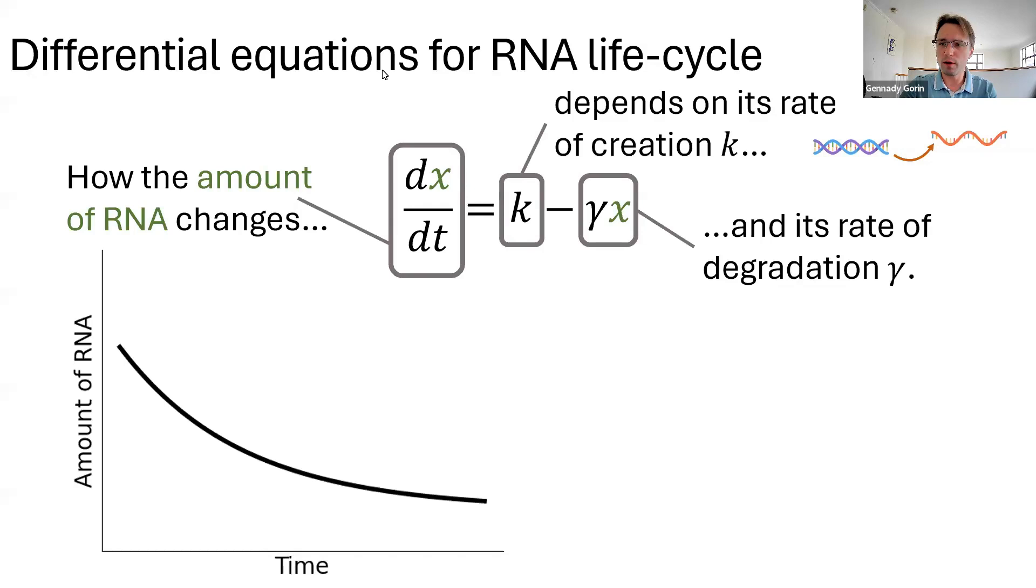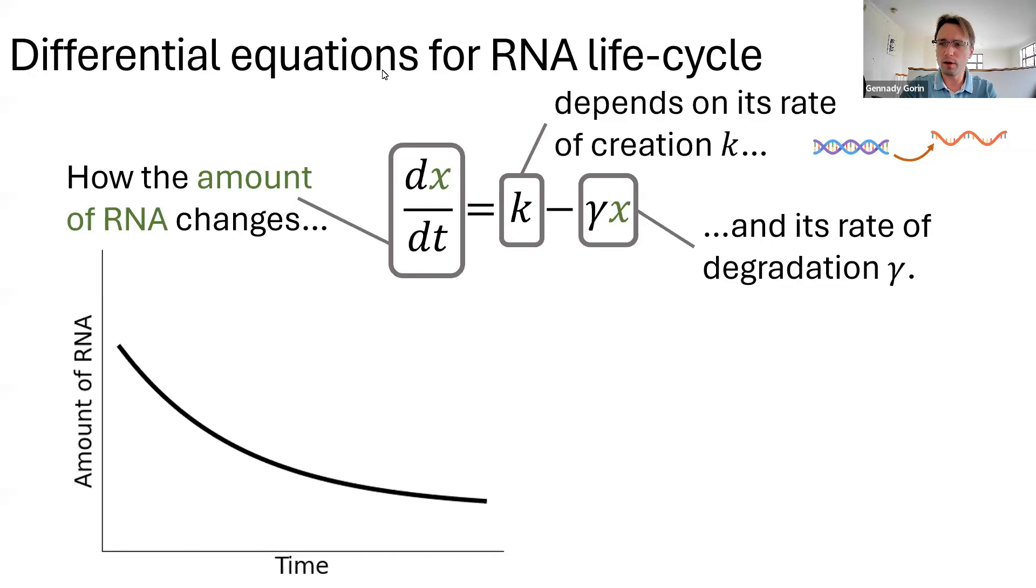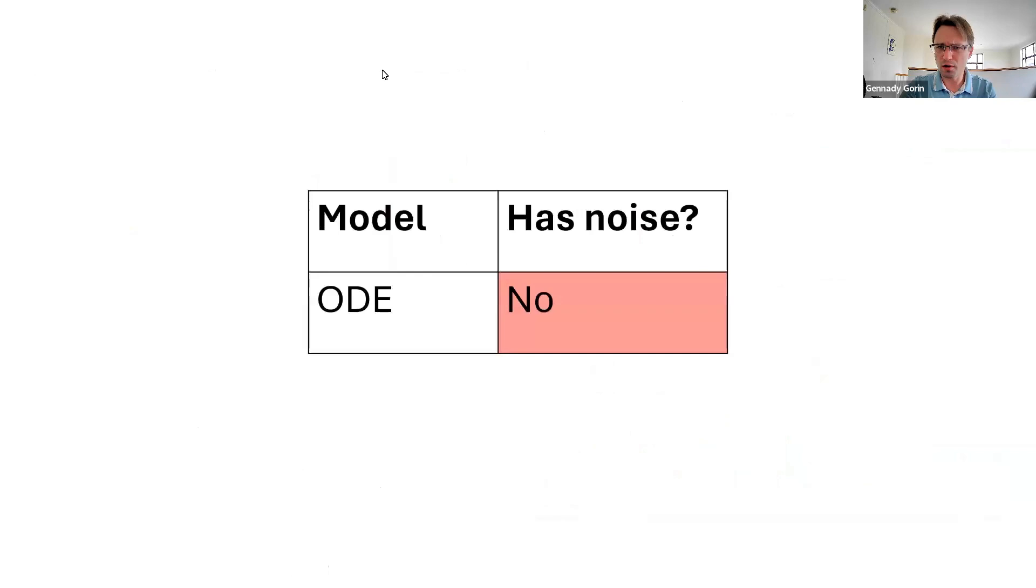Now, this concept turns out to work great if we have thousands of molecules, but if we look at single molecule measurements, we just don't see that. The amounts of RNA are jagged. They vary with time. They don't converge to a single value. They keep changing. Somehow, we need to account for this variability intrinsic to the process.